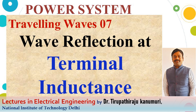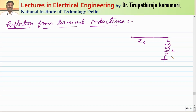Today we are going to discuss reflection from terminal inductance — if the line is terminated by an inductance, how the reflection is going to happen. Let Zc be the characteristic impedance of the transmission line, and assume an incident wave on this line with voltage e. When it reaches the terminal, the voltage across the inductance is el and the current through the inductor is il. Some part will be reflected back, represented by ir, the reflected current wave.